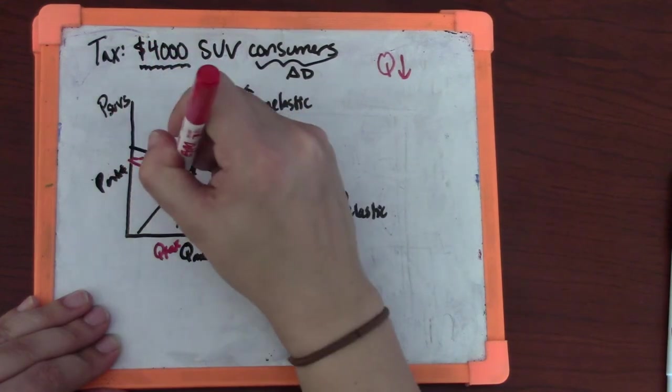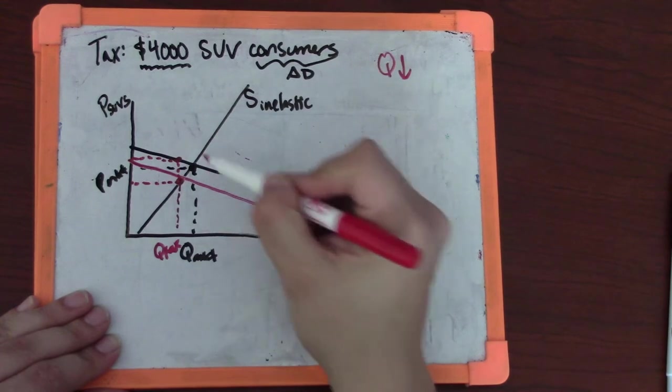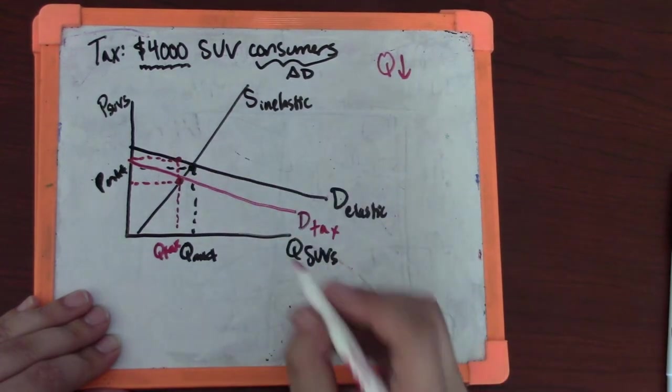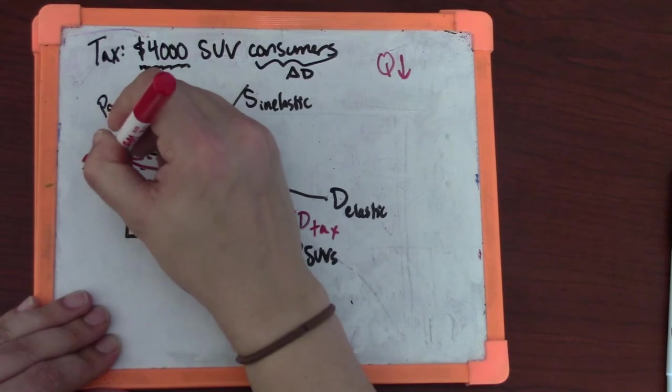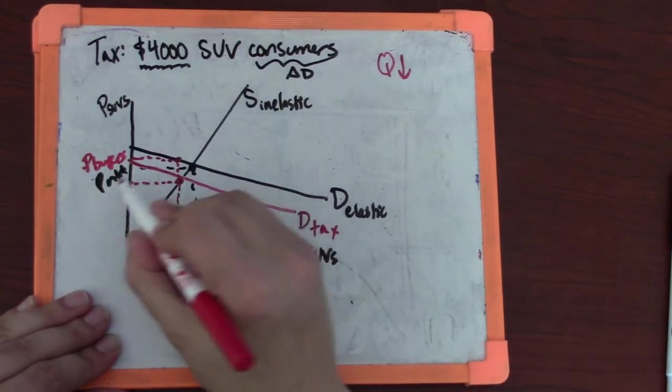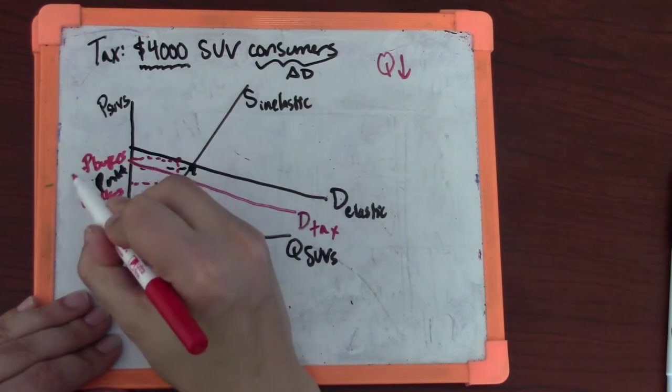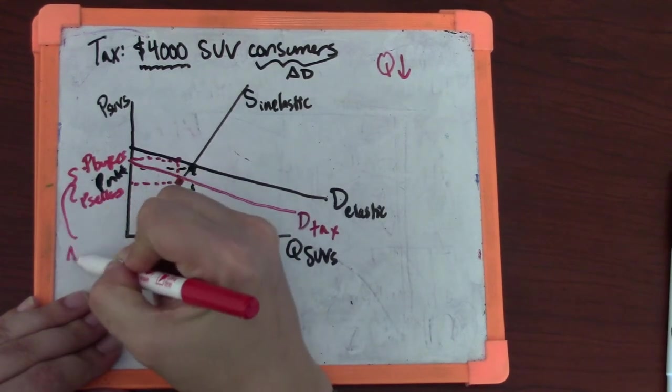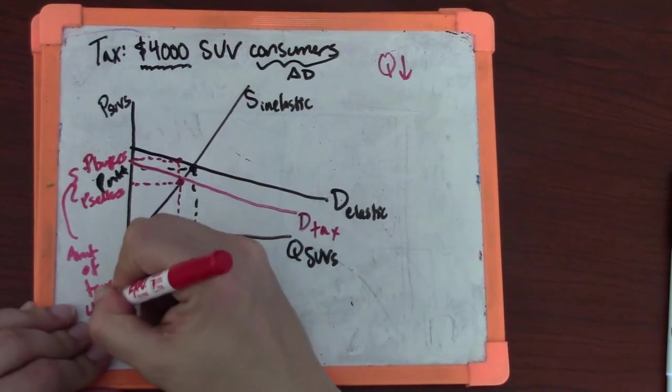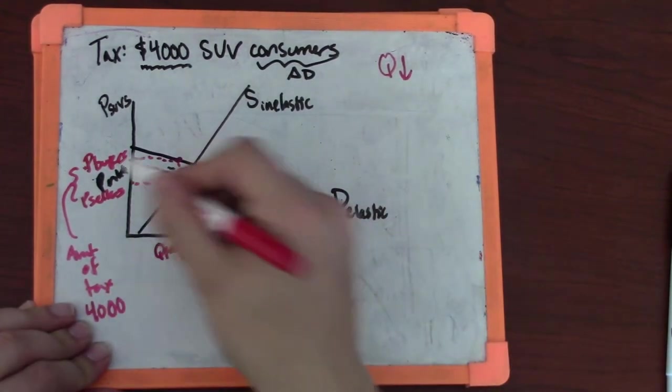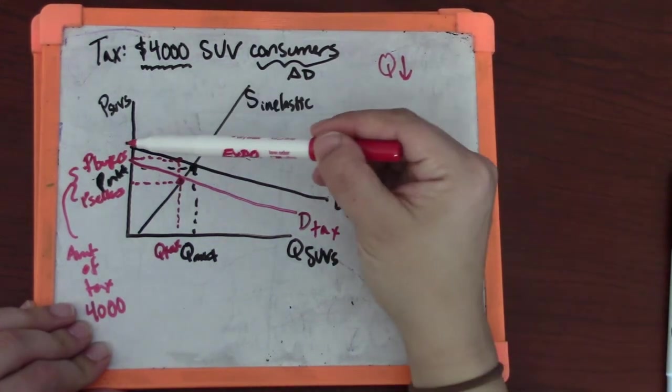The next thing we do is we look at that quantity, what the old demand curve is telling us. These are the two prices that we care about. That quantity hitting the supply curve, that quantity hitting the demand curve. The price up here is the new price that buyers are going to pay in the market. The one down here is the price that sellers will take home, and the difference between them is the amount of the tax.